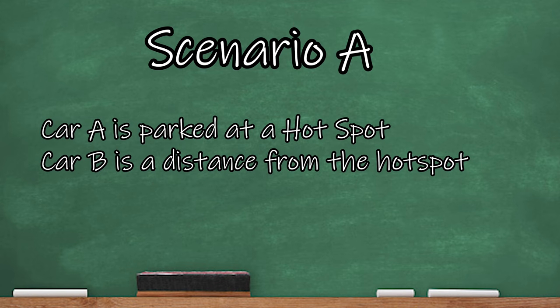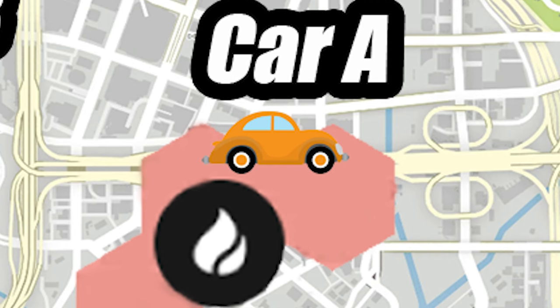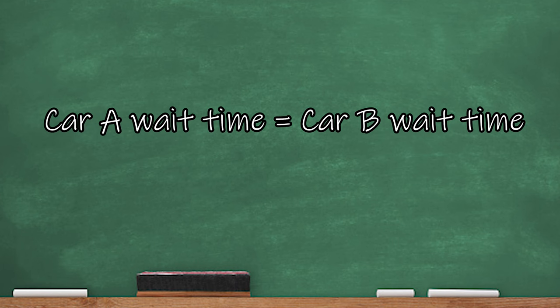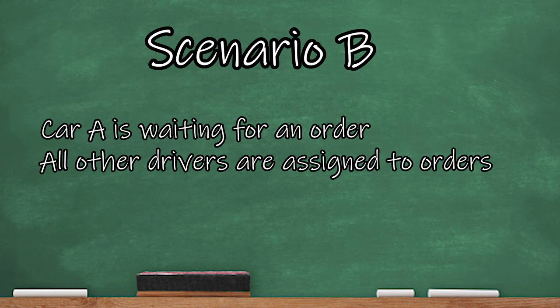Scenario A: Two drivers that have been waiting the same time for an order — one parked at a hotspot and one a distance from the hotspot. An order comes in from the hotspot. The first driver to get the offer will be Driver A, who is parked closest to the restaurants and is in the hotspot zone — the most logical choice for the algorithm. If Driver A declines, Driver B is the next closest and will be offered the same order. This is based on both drivers being at equal position in the available driver queue.